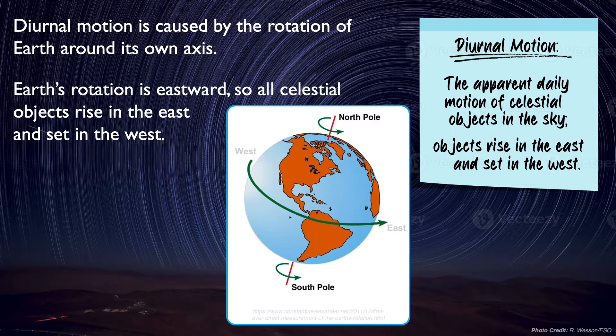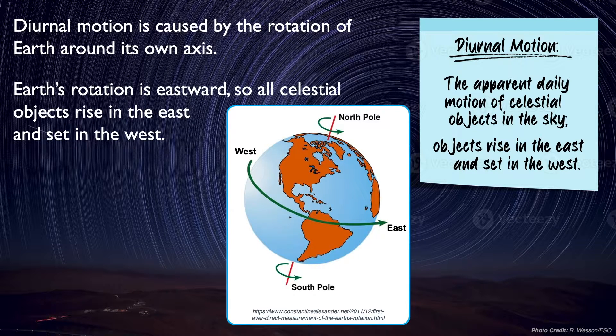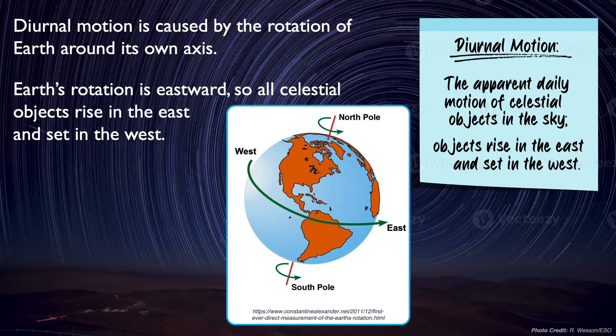Earth's rotation is eastward. So as the celestial objects come into view as the Earth rotates towards the east, they appear to be rising from behind the eastern horizon. Similarly, they set in the west as they move out of view with Earth's rotation.